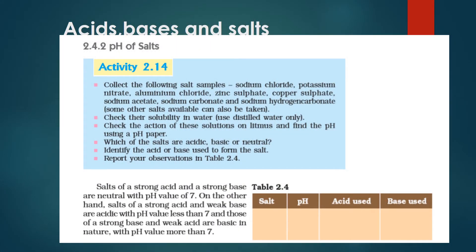Hello students of Class 10, let's continue our chapter on acids, bases, and salts. In my last video I discussed pH — the power of hydrogen. pH can be calculated by pH paper, also called the universal indicator. The universal indicator gives us information on how strong or how weak an acid or base is.